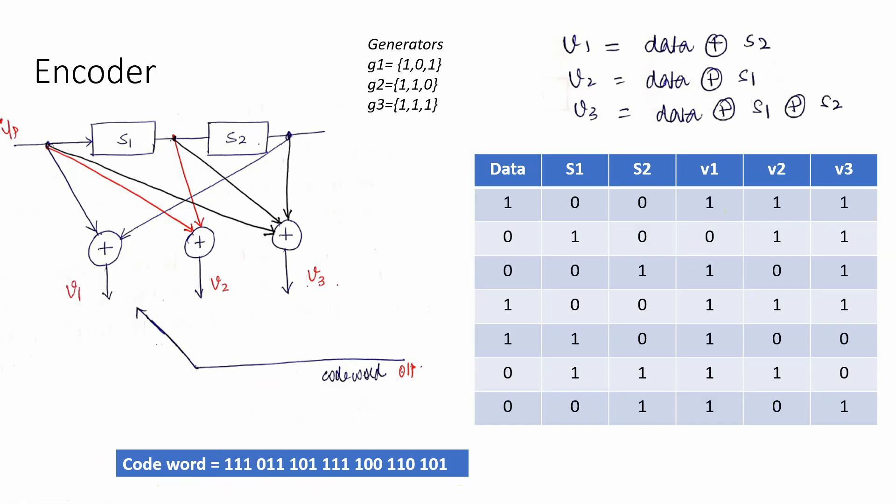In this video, we saw how to design a convolution code encoder and how to obtain the codeword for the given data sequence. In the next video, I will explain one more example on the convolution code encoder, and then we will see how to draw the state diagram for the given convolution code encoder. Thank you very much for listening.